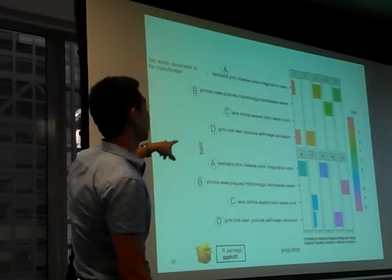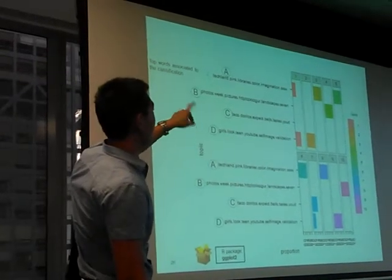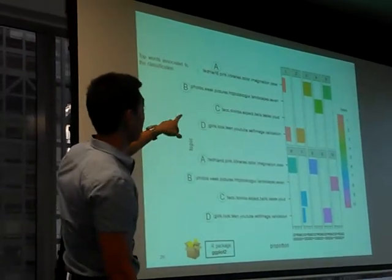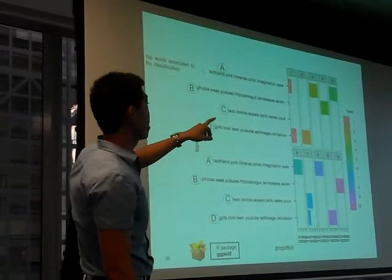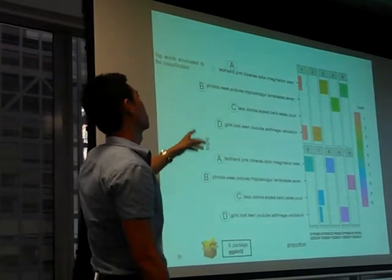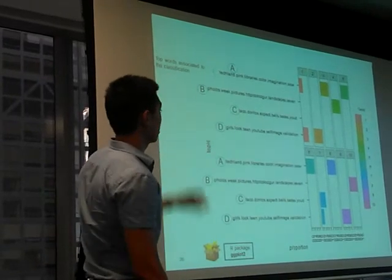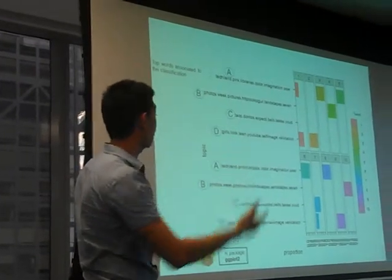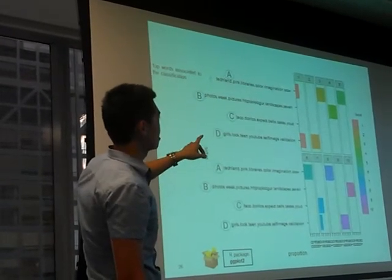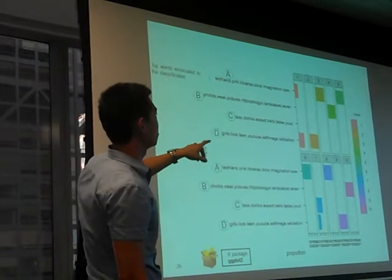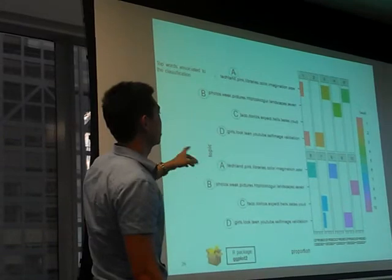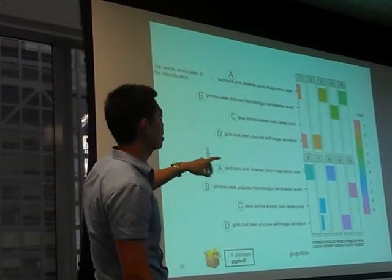So there's Topic A, B, C, and D. For Topic A, some of the top words associated to that topic are like Blan, King, Library, Color, Imagination, and SW. Topic D is Photo, Week, Quick, Pictures, Landscape — so that gives me an idea that that's probably something to do with photography. Topic C is something about activity. And D is basically something to do with self-imaging on YouTube.